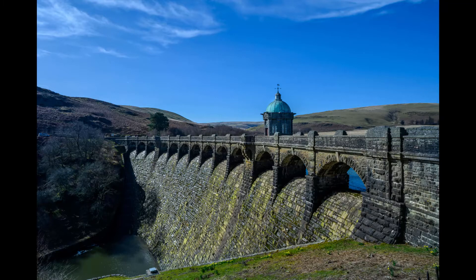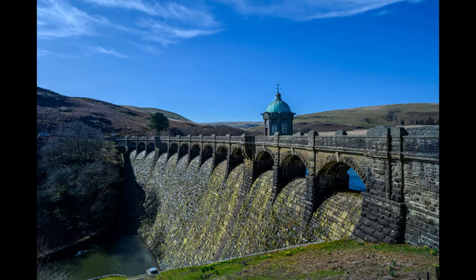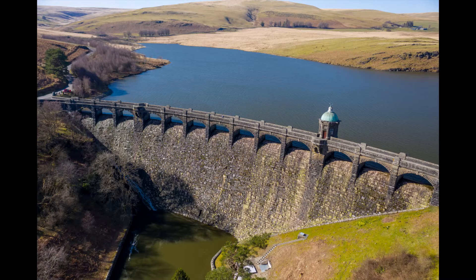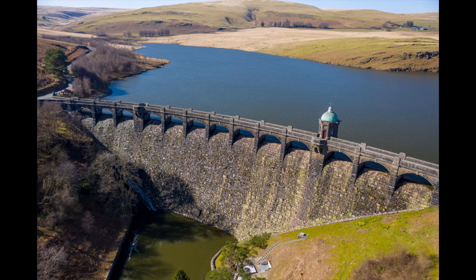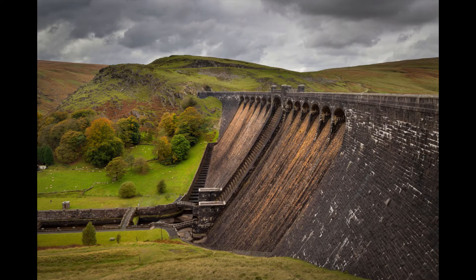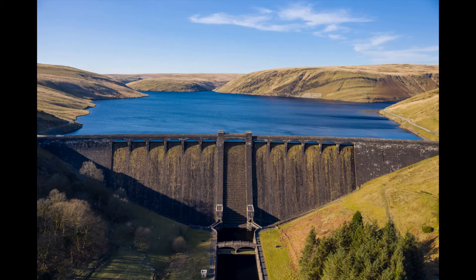So this is what they did. In an astonishing feat of Victorian engineering, the Victorians built a series of four dams and reservoirs to store drinking water for Birmingham. Construction on these dams and reservoirs began in 1893 and was completed in 1904. And in total, the system can hold 100 million cubic meters of water.